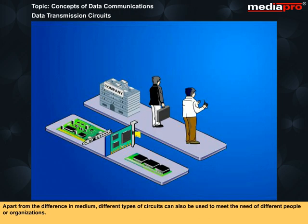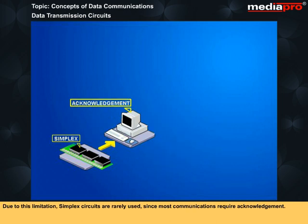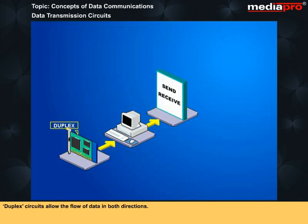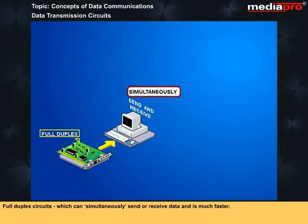Apart from the difference in medium, different types of circuits can also be used to meet the needs of different people or organizations. Simplex circuits allow the flow of data only in one direction, so that a terminal connected to such a circuit is either a send-only or receive-only device. Due to this limitation, simplex circuits are rarely used since most communications require acknowledgement. Duplex circuits allow the flow of data in both directions. Half duplex circuits can alternately send or receive data, and full duplex circuits can simultaneously send and receive data, and are much faster.